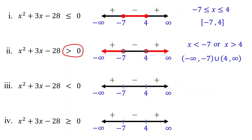In number line notation, we use an open circle to show that the endpoint of the inequality is not included in the solution. In interval notation, the solution is represented as negative infinity to negative 7, union 4 to positive infinity, excluding both negative 7 and 4. We use parentheses to indicate that the endpoint is not included. We also use parentheses for negative and positive infinity, as they are not a specific point on the number line. Now, please pause the video and give it a try when the inequality is less than 0 and greater than or equal to 0.